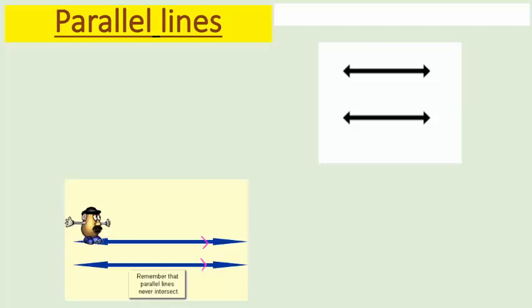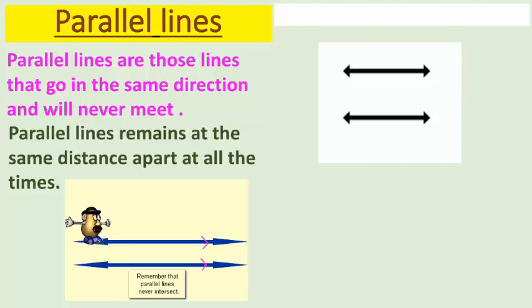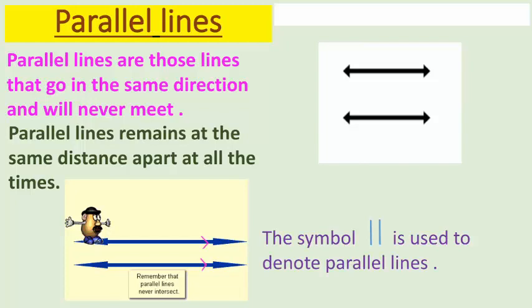Now let us come to parallel lines. Always remember that parallel lines never intersect each other. Parallel lines are those lines that go in the same direction and never meet each other. Parallel lines remain at the same distance apart at all times, and we represent parallel lines through the help of two vertical lines.